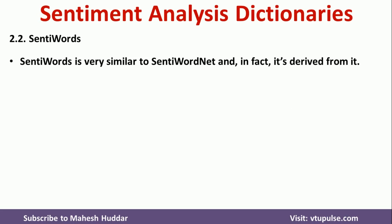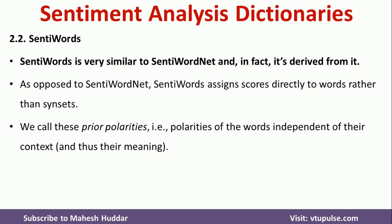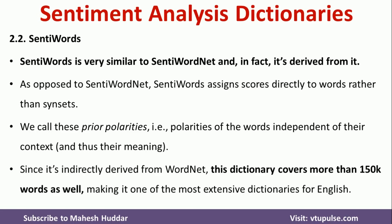The second dictionary is SentiWords. SentiWords is a very popular dictionary, similar to SentiWordNet, and is derived from SentiWordNet itself. However, in SentiWords we assign sentiment scores directly to words rather than to synsets. These are called prior polarities — the polarity of words independent of their context. SentiWords has more than 150,000 words.